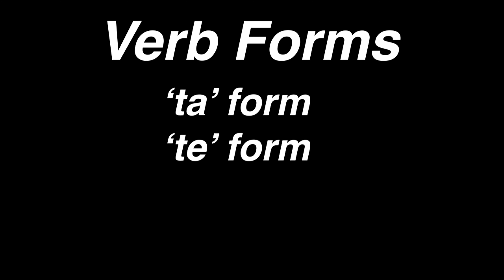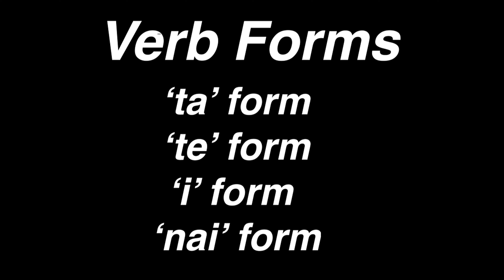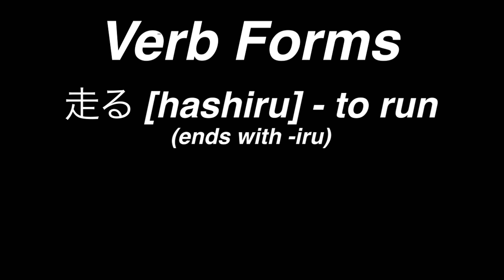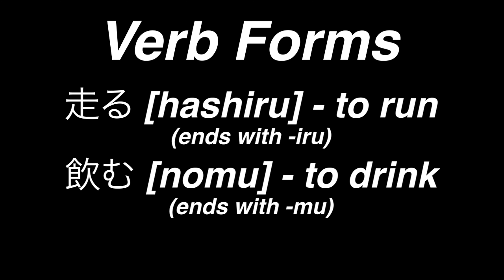Verbs also have a lot of forms, including the ta, te, i, and nai forms. Depending on what the verb is, the rules that make these forms can vary. I'll be demonstrating two of these forms with the verbs hashiru, to run, and the verb nomu, to drink.